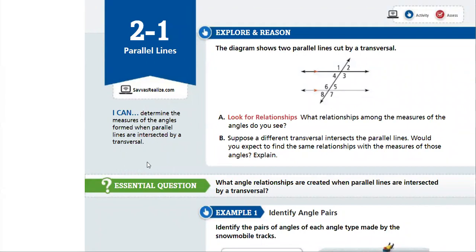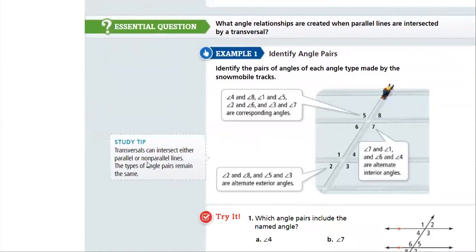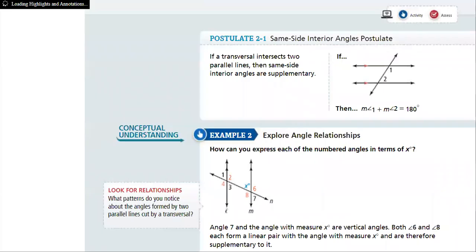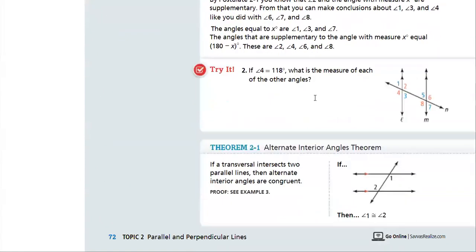In lesson one, we will learn what angle relationships are created when parallel lines are intersected by a transversal. What relation do they make? What do we call them? Alternate interior, alternate exterior. We will also talk about same side interior angles and alternate interior angles.